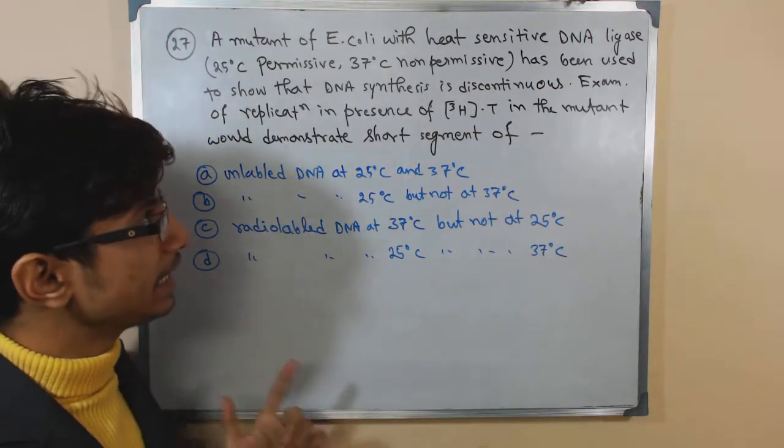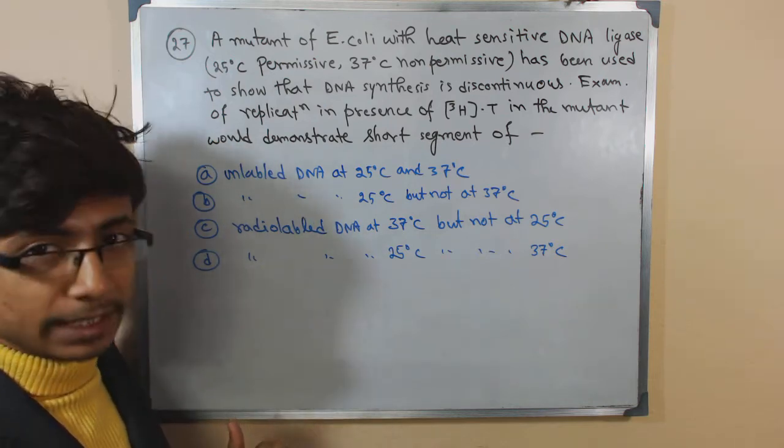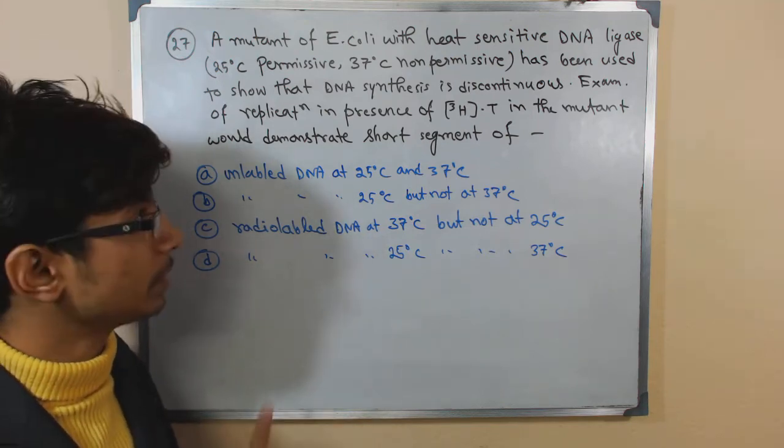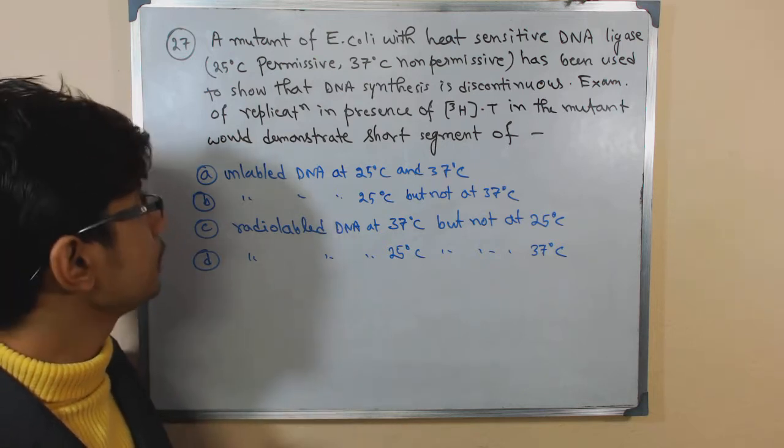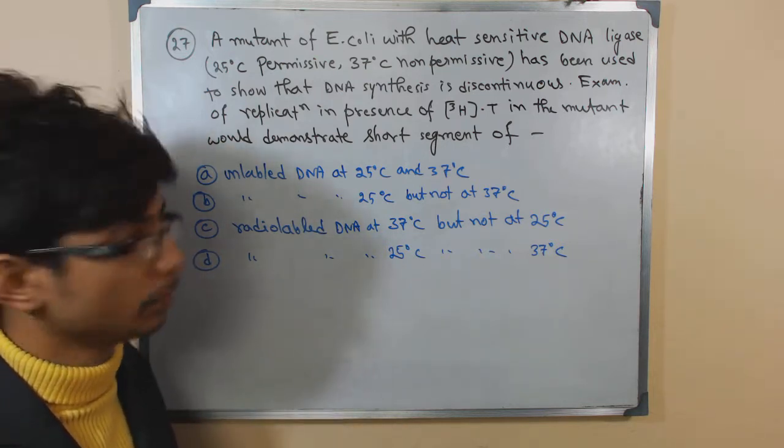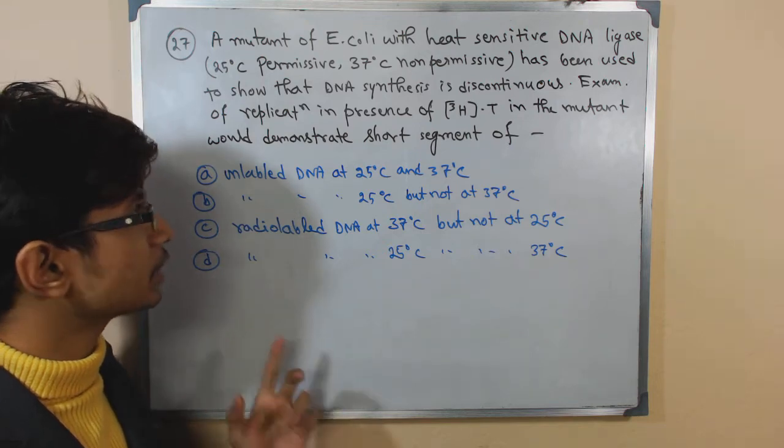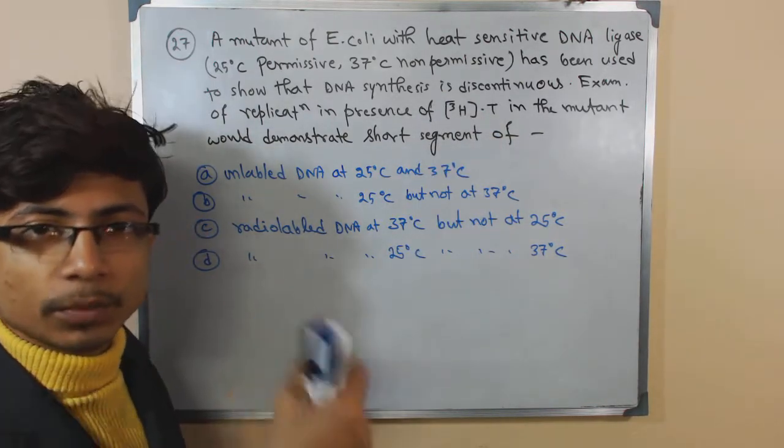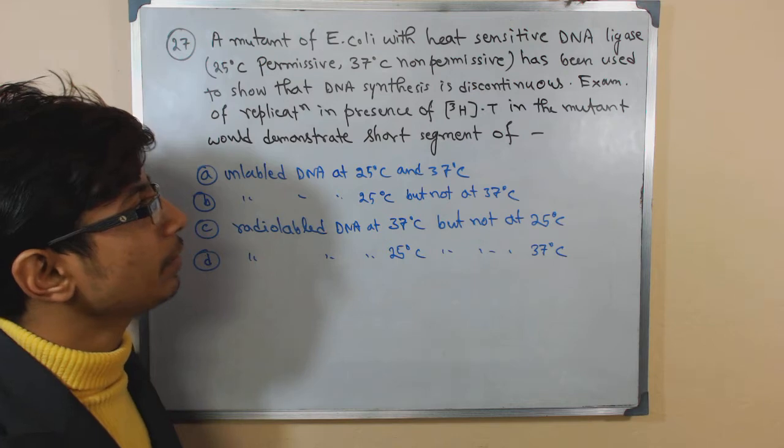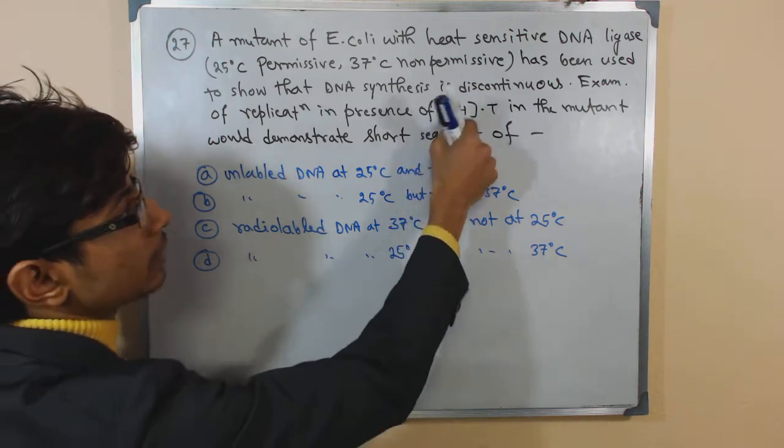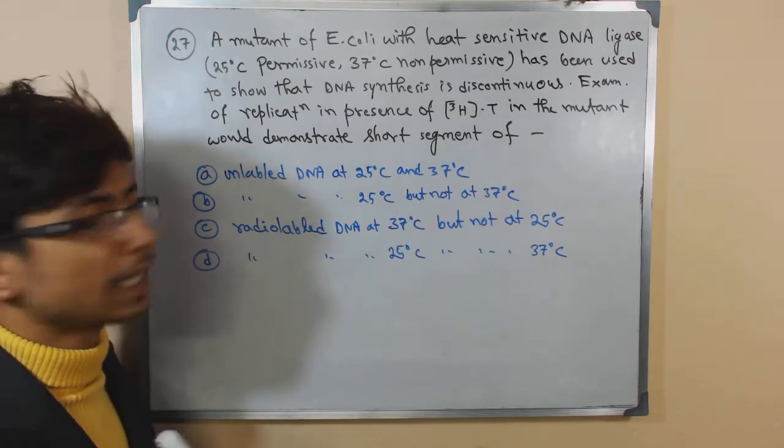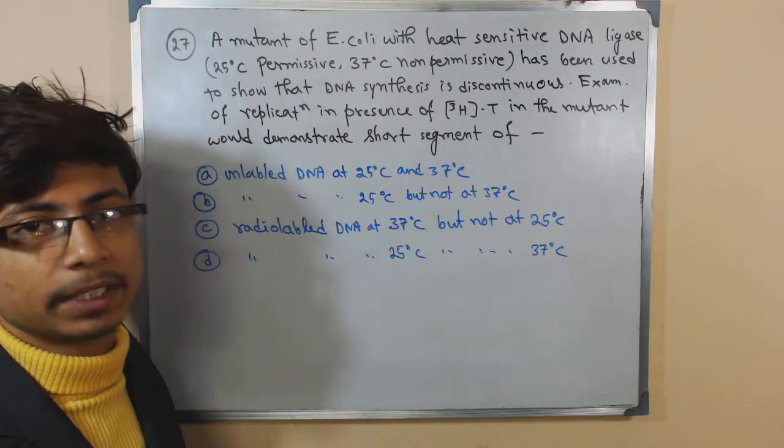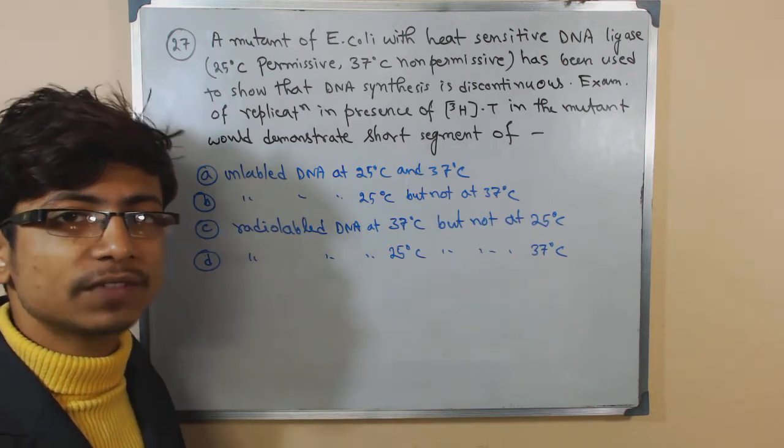A mutant of E. coli with heat-sensitive DNA ligase, where 25 degrees Celsius is permissive for replication, but 37 degrees Celsius is non-permissive. This DNA ligase has been used to show that DNA synthesis is discontinuous. Examination of the replication in presence of 3H, a radioactive isotope of hydrogen, with radiolabeled thymine is used in that mutant DNA. What result can we obtain by using that radiolabeled thymine to see the discontinuation of DNA replication?